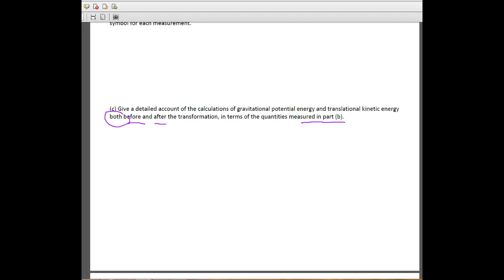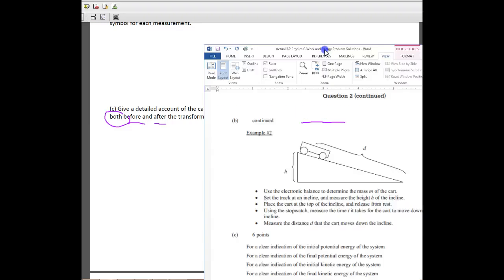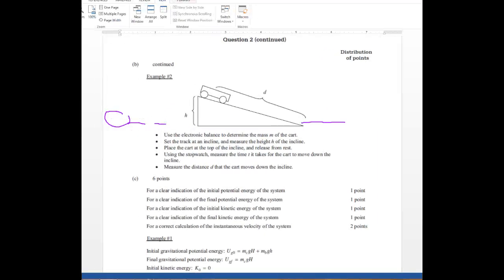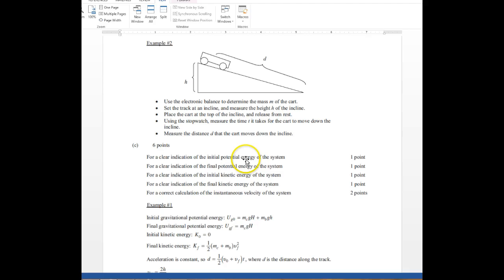So what we need to do for part C here is show you what we really want. What they would like you to do is show initial potential, final potential, initial kinetic, final kinetic, and then also show the velocity of the system.